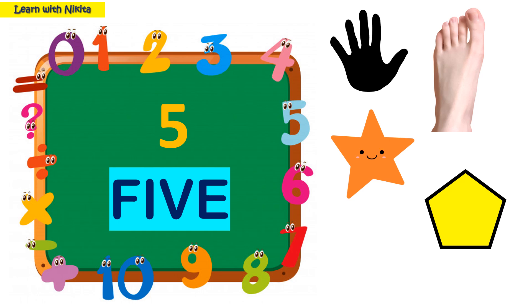Four fingers and one thumb in the hand, four fingers and one thumb in the leg — making five. Five sides of the star and five sides of the pentagon.